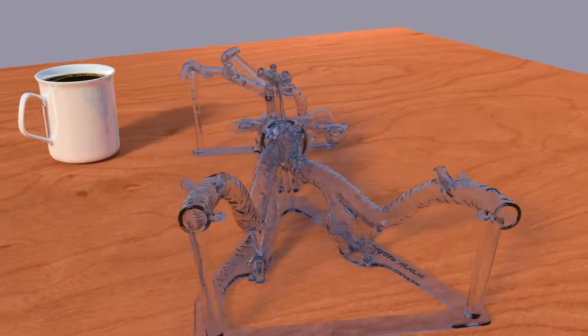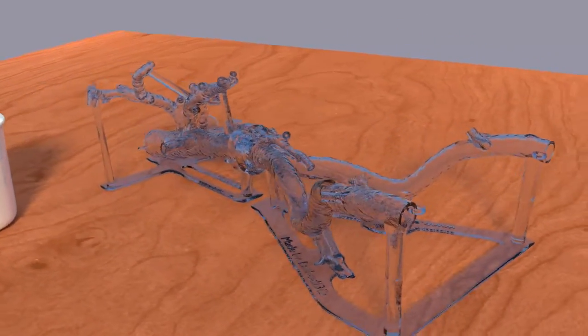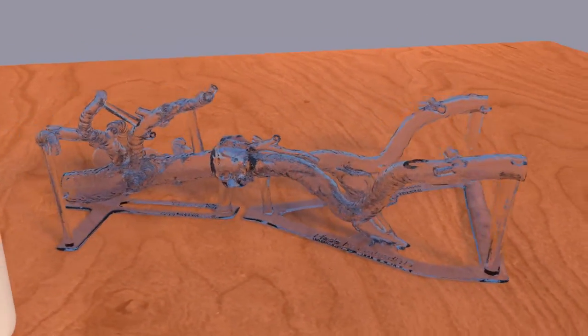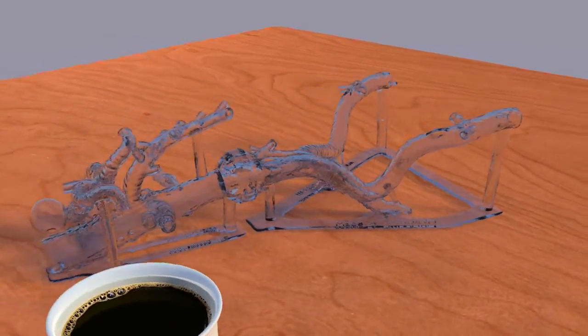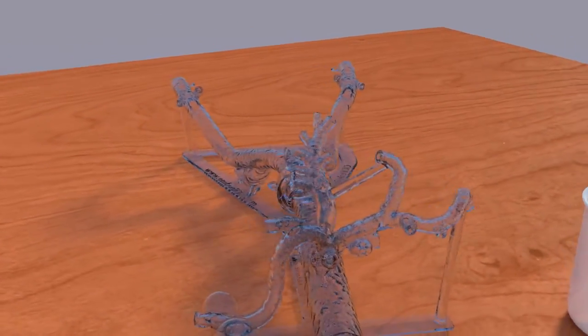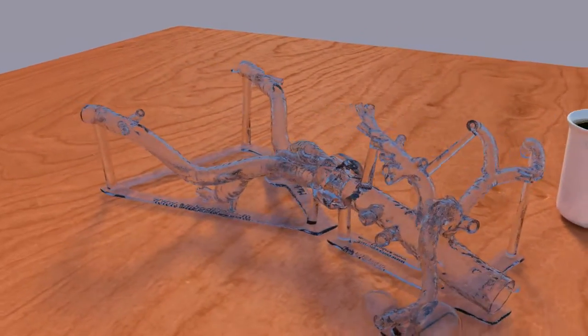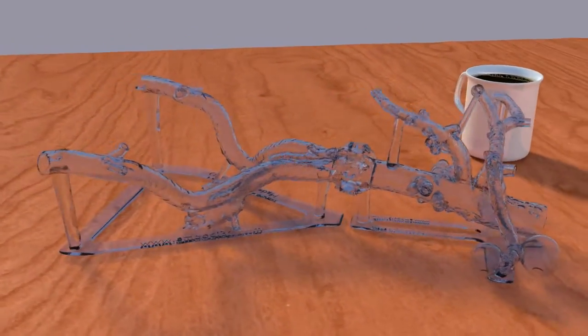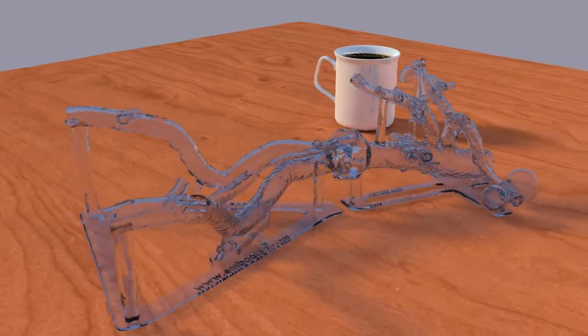The full aortoiliac model combines the benefits of the other two models. With complete arterial anatomy from the common femoral arteries at the hip to the diaphragm, a wide variety of abdominal and pelvic arterial interventions can be simulated realistically.